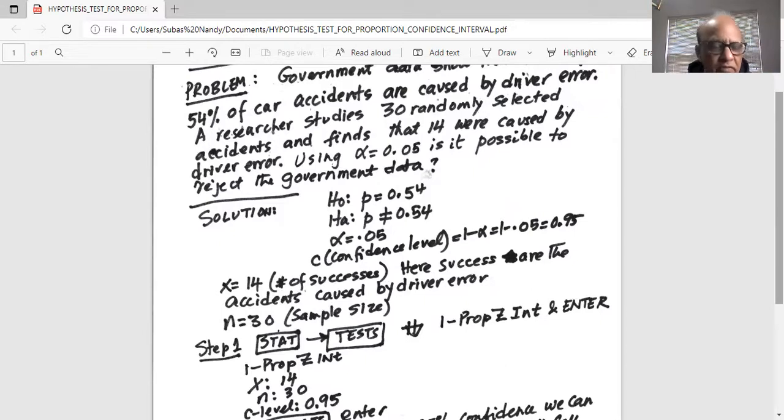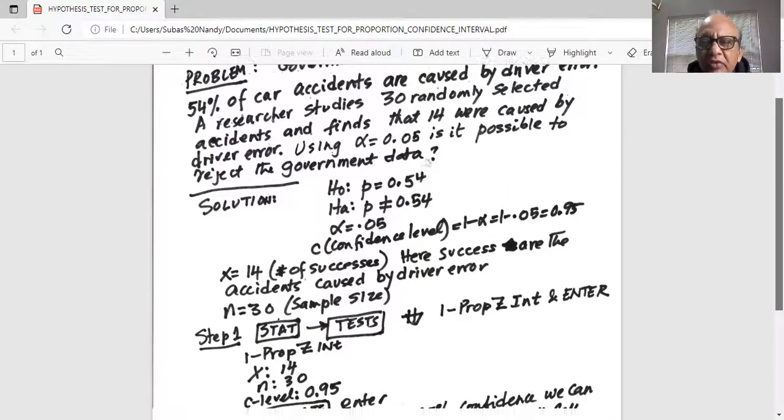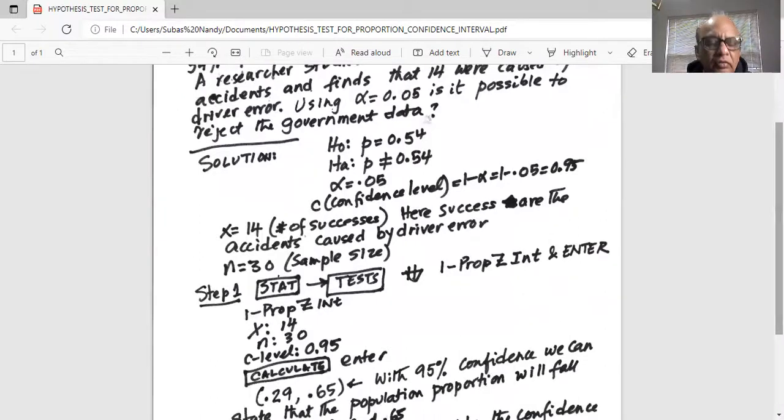Okay. Your x is 14, type x, number of successes, the small number, 14. And n, x is 14 out of sample size, n is 30.